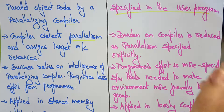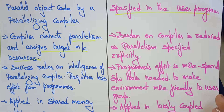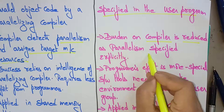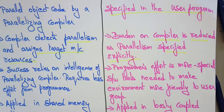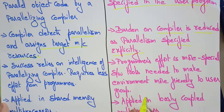The compiler detects the parallelism and assigns the target machine resources to that particular instruction. Whereas in explicit parallelism, the burden on the compiler is reduced because the parallelism is specified explicitly. The compiler is not supposed to detect parallelism automatically, because the programmer has already written everything outside — special functions, directives, operators — so there is no burden for the compiler. It is just translating the code.